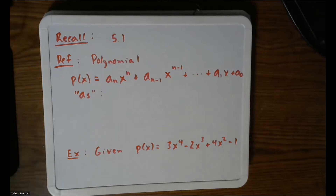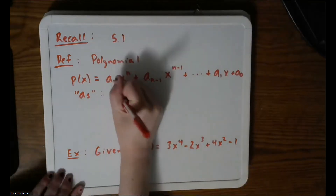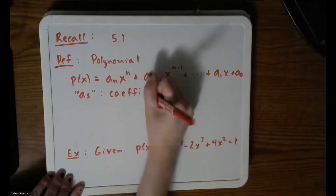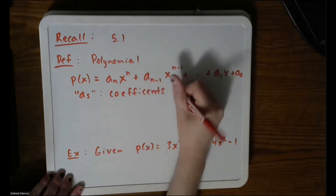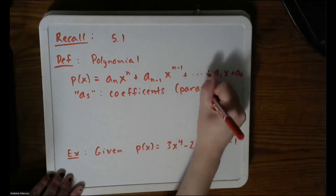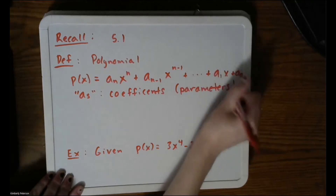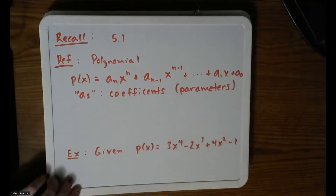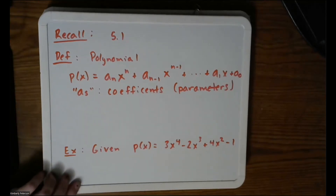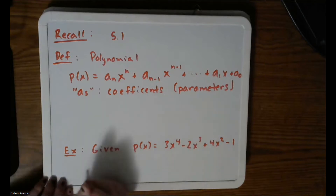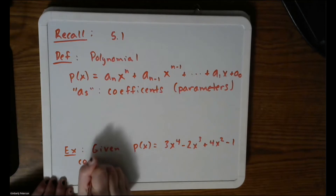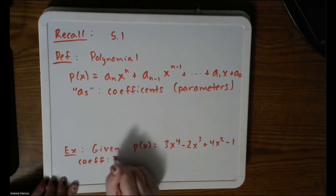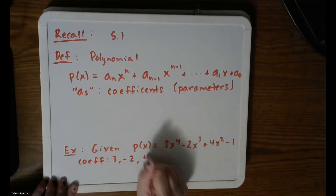They are parameters — that's one thing we could call them — and more specifically they're called the coefficients. They are the things that are given, so they are parameters. When we are dealing with polynomials, we specifically refer to them as coefficients, and they're just numbers — any real number. So in this example, our coefficients are 3, negative 2, 4, and negative 1.